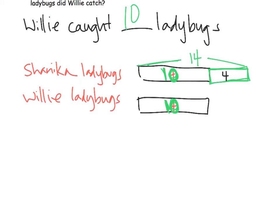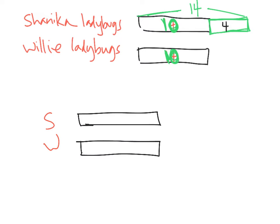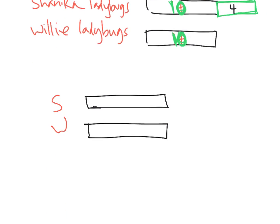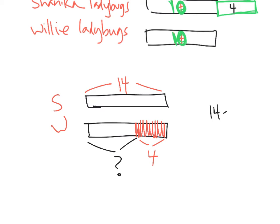I'm wondering if we might've done it a different way. Shanika and Willie — we've got their tape diagrams and we go back: Shanika caught 14 and she caught four more ladybugs than Willie. The idea might be we say Shanika caught 14 which is four more, so that might mean we cross off four from Willie's tape. Here's our question mark, and we know this whole thing started out as 14 because the bars were identical, and then 14 minus four is 10. So that's how we got 10 — a couple of different ways.